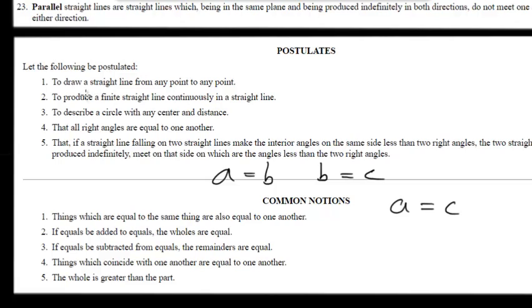Or for instance, postulate 1, which we'll use in this video, to draw a straight line from any point to any point. Basically, that says that if we have two points, we can draw a straight line between them. So with that in mind, let's focus on creating an equilateral triangle.